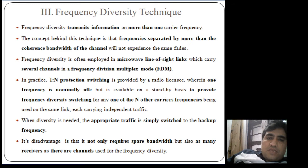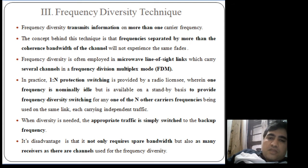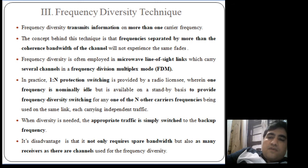To implement this, there is a 1-to-N protection switching provided by the radio licensee, where one frequency is used for the implementation of frequency diversity scheme alongside N other carrier frequencies. The disadvantage of this technique is that it requires one additional bandwidth for implementation, as well as as many receivers as there are frequencies being used.